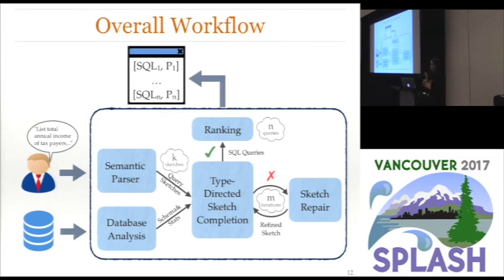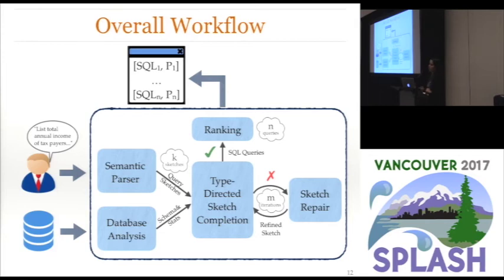To summarize, this is the overall workflow of our algorithm. Given the English description, we use semantic parsing to generate the top K most likely sketches. Then we alternate between type-directed synthesis and repair to figure out all possible completions. At the very end, we have a global ranking step where we rank each query according to its confidence score and present the top N results to the user.